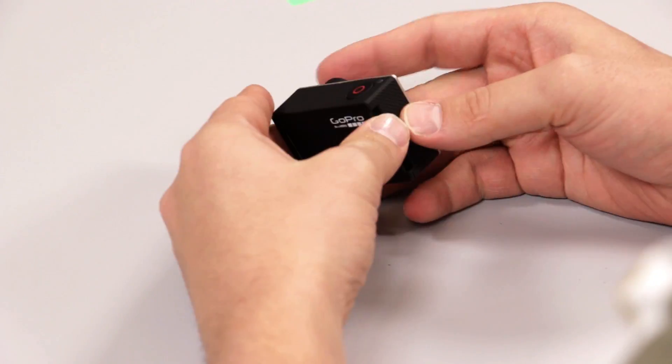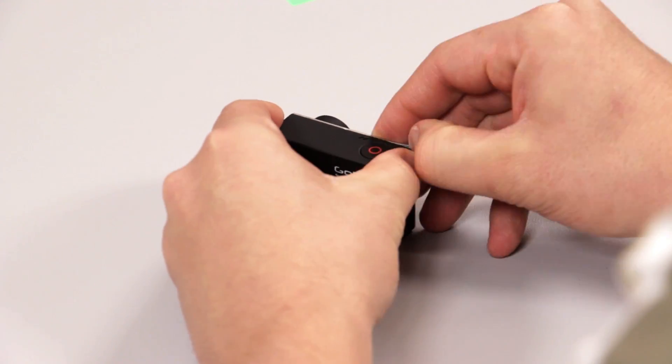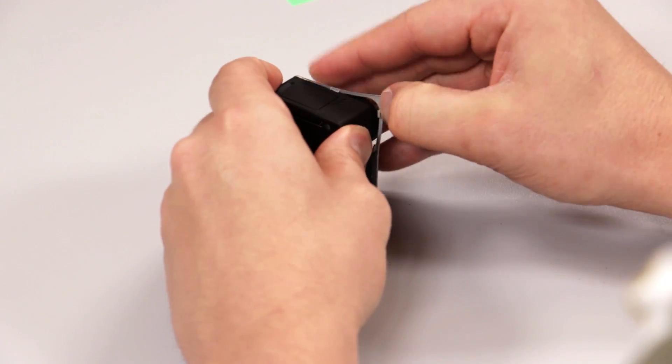The first step is to remove the faceplate. There is some adhesive on it, but by carefully prying around the edge, you can get it off without bending or breaking it.